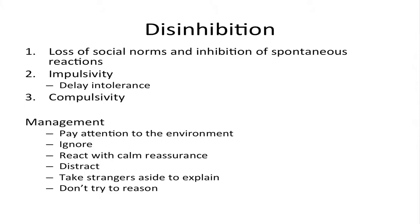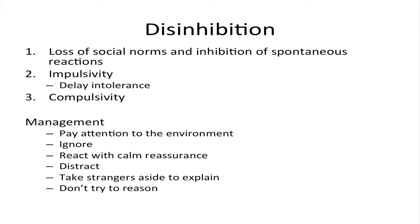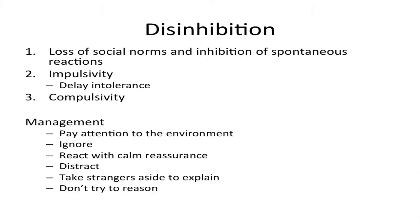The next behavioral manifestation is disinhibition, which can seem paradoxical to apathy, and the same person can experience both. Disinhibition means three things: loss of social norms — such as urinating or disrobing in public, or inability to inhibit saying curse words or politically incorrect statements; impulsivity, such as delay intolerance where a patient can't wait even a few feet for their caregiver; and compulsivity, which can manifest as changed eating patterns, shopping, gambling, or other compulsive behaviors.